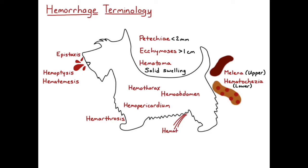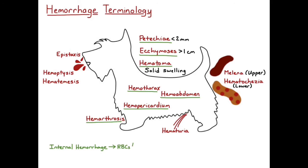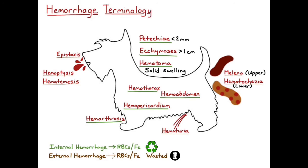Hematuria is the term we use to describe blood in the urine, and that could be coming from the urinary tract or the reproductive tract. All of these hemorrhages are grouped into one of two big categories: internal hemorrhage or external hemorrhage. Internal hemorrhage occurs within the tissues and within the body, so the red cells and iron can be recycled. External hemorrhage means the blood is being lost from the body into the environment, so the red cells and iron are essentially wasted and cannot be reused.